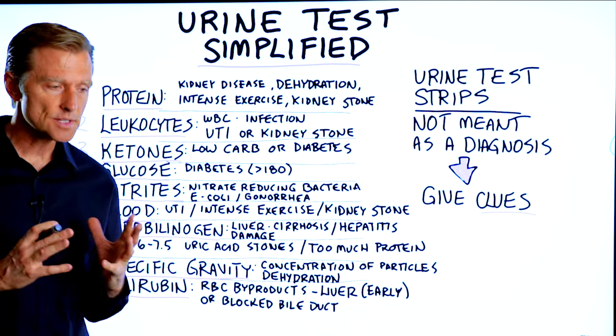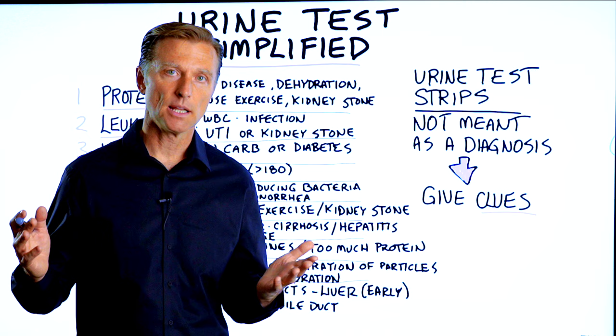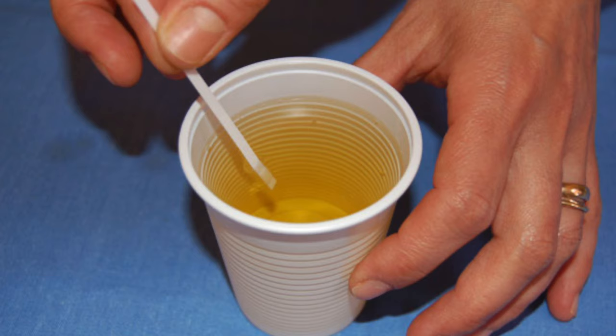I want to teach you very simply how to read these little urine test strips. You can buy them online and they will give you some general information on what's going on inside your body just by exposing them to urine. These different little parts of it change different colors and you can get different ideas on what's going on.